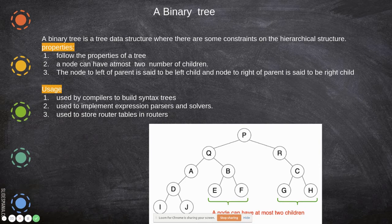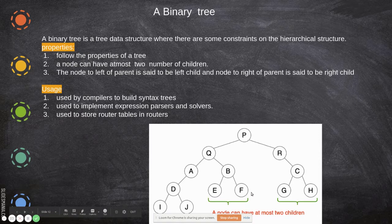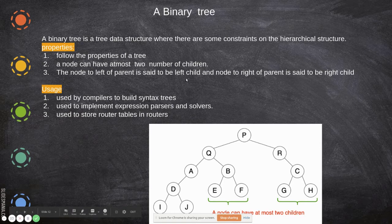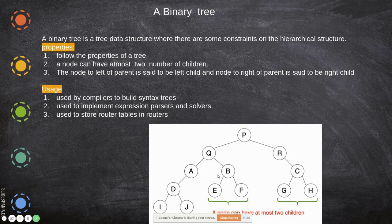The next one is a binary tree. The name itself says 'binary' — only two. Each node will consist of only two children: zero, one, or two children — not more than that. It cannot have three or four children. It follows the general properties of a tree: it has a root node, and then children, which in turn become parents and have more children.